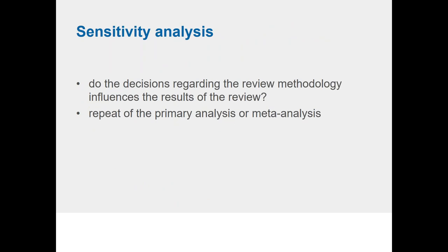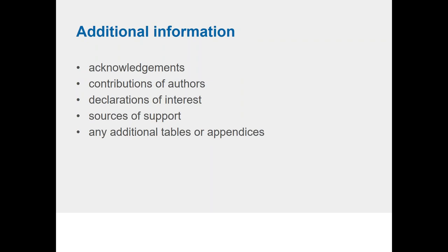Sensitivity analysis is performed to examine whether decisions regarding review methodology influence the results. It is essentially a repeat of the primary analysis or meta-analysis. For example, you may reanalyze data by excluding all studies classified as high risk of bias to assess whether those studies differentially affected the results. Under additional information, include acknowledgements for contributors, declarations of interest, sources of support, and any additional tables and appendices.